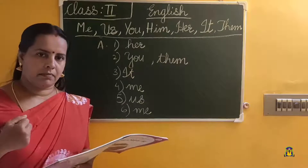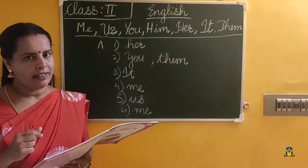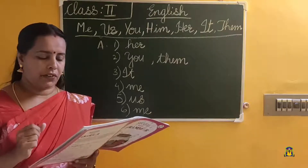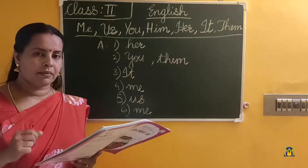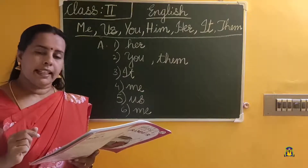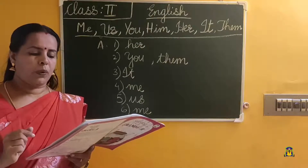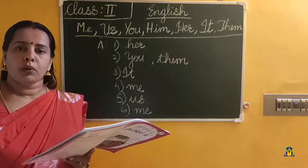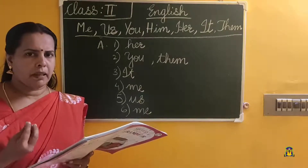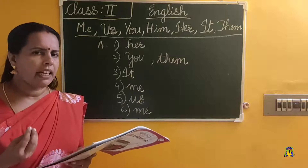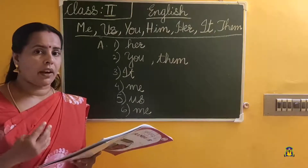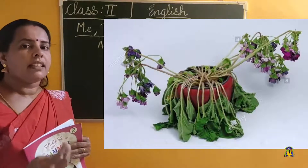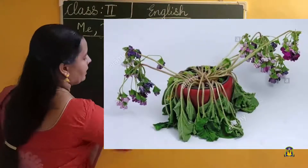Questions 7 to 13 are homework for you — do them as an assignment. Read the sentence completely, then think and write. Now B exercise. First: These plants are so dry. We should water dash daily. The options are me and them. Plants are plural, and water me daily we won't say. Plants means they, so the answer is them. Water them daily.